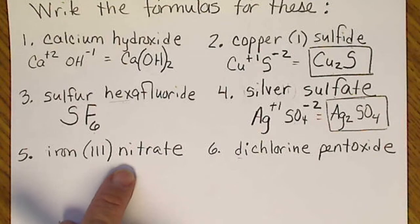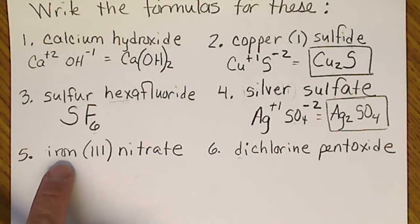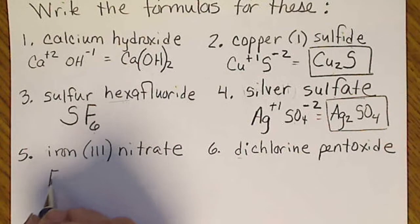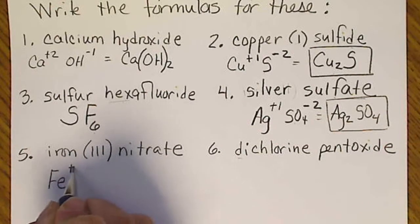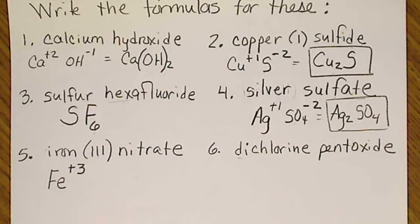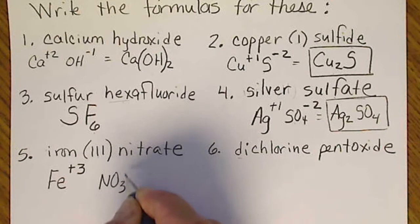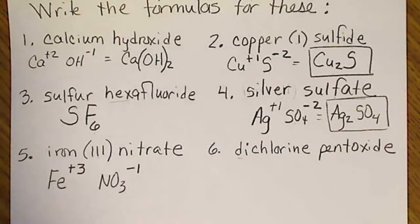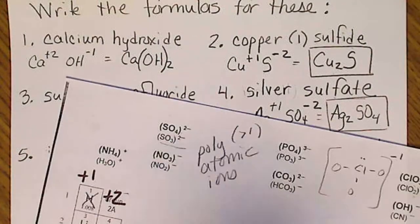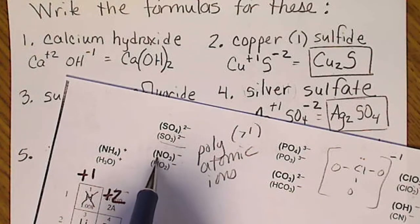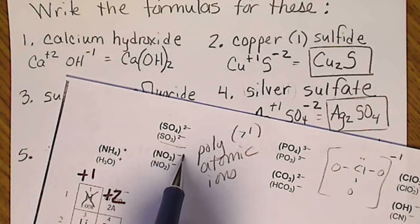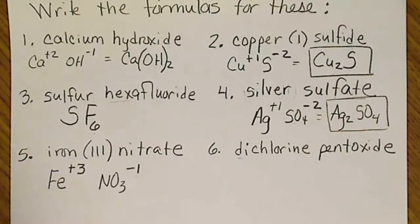Iron(III) nitrate: again a transition metal with the charge written as a Roman numeral, so that means iron +3. Nitrate is NO3-1, so the entire nitrate ion has a charge of -1.